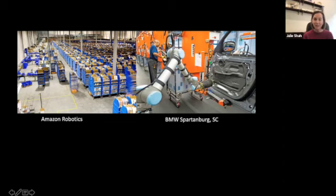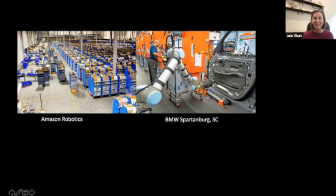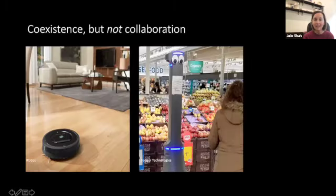These systems are, in these industrial settings, still coexisting rather than collaborating. There are more than 1.8 million industrial robots in operation around the world today. What I'd like to do is ask the question: given that 1.8 million number, how many robots would you guess are in US homes today? The answer, no matter what the audience is — whether roboticists, AI researchers, or a general audience — ranges somewhere from 10,000 to 10 million. The number is actually somewhere around 30 million robots in US homes today.